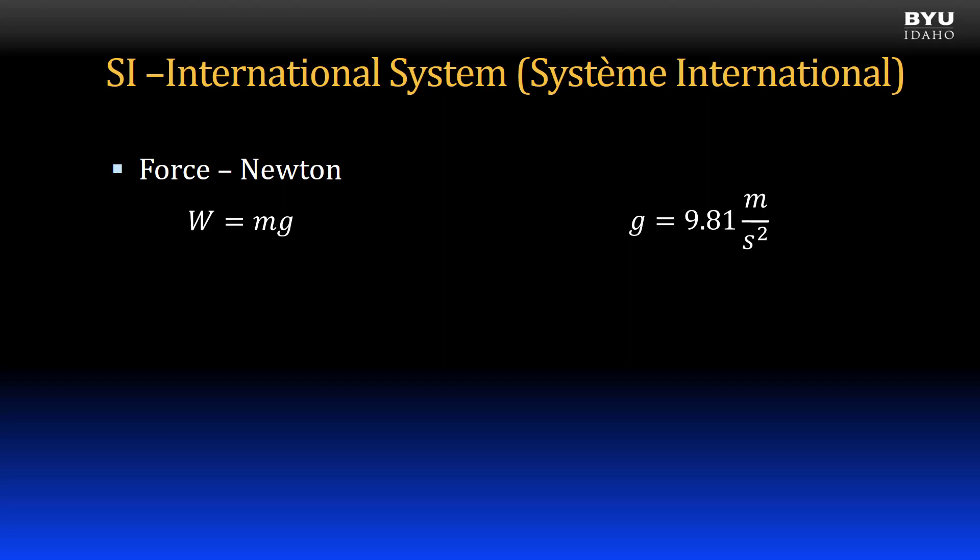If we take a mass of 1 kilogram and multiply it by g, we get a value of 9.81 kilogram meters per second squared, which is kind of an awkward unit to use.